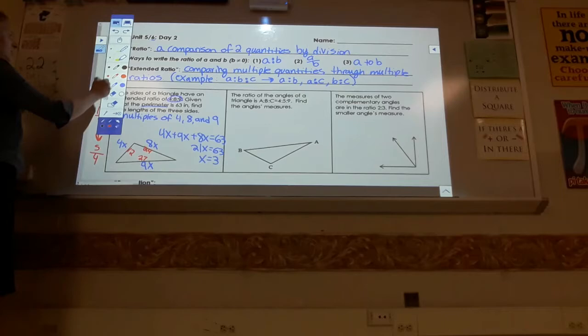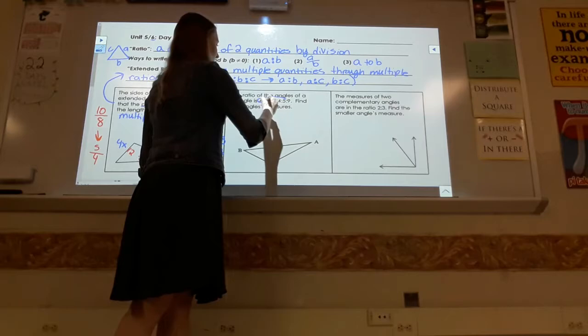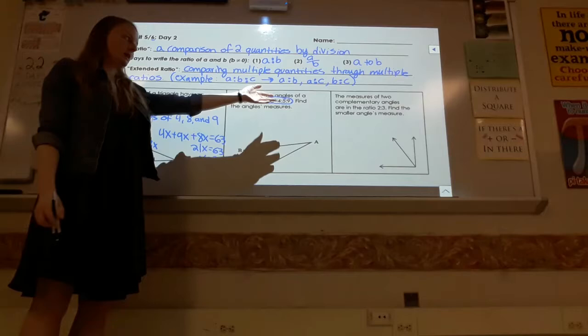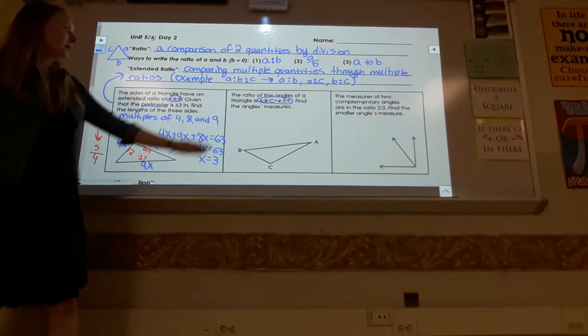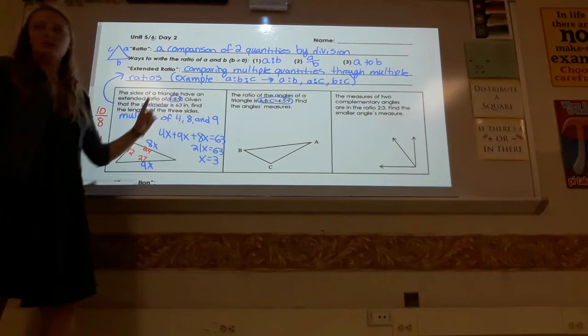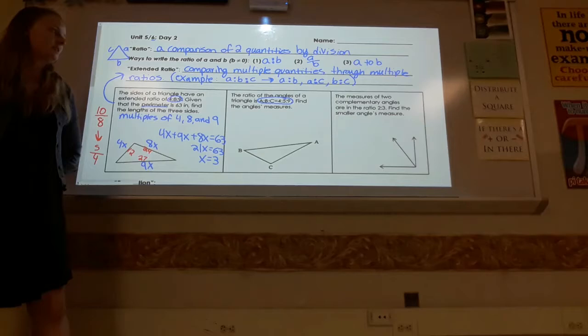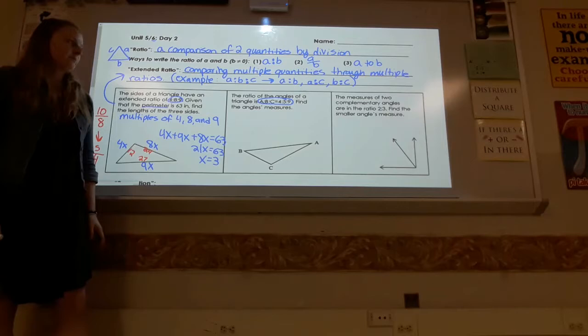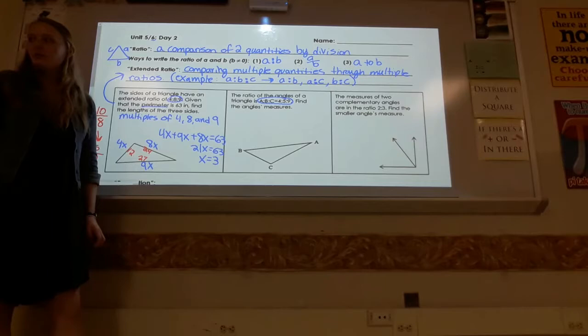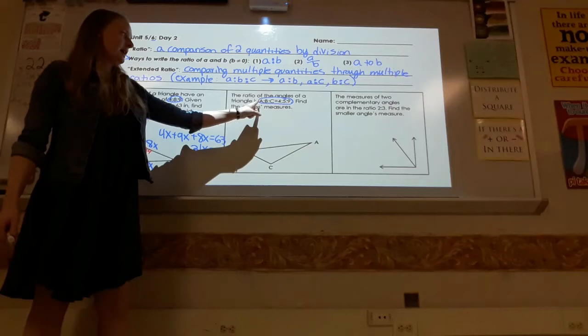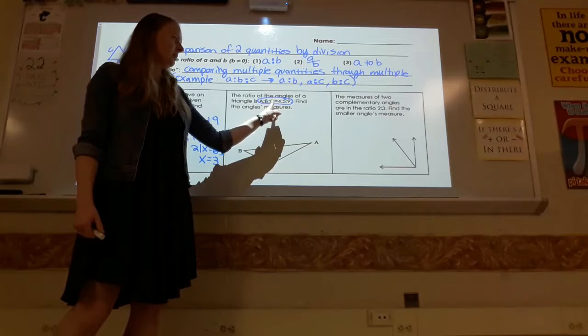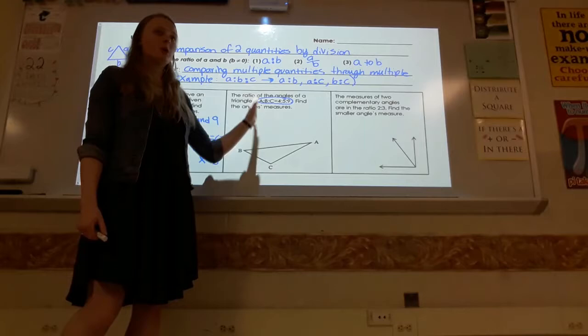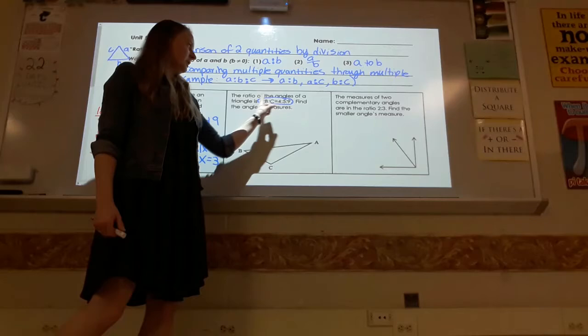Another scenario: the angles of a triangle are in the extended ratio, written as an extended proportion with an equal sign assigning numbers to specific angles. Angle A corresponds to 4, angle B to 5, and angle C to 9. When they specify which letter goes to which number, you must follow that guidance. So the angles are labeled 4x, 5x, and 9x.